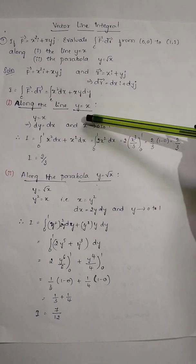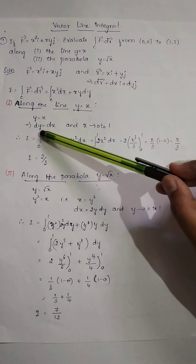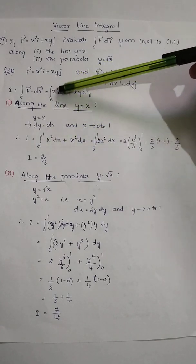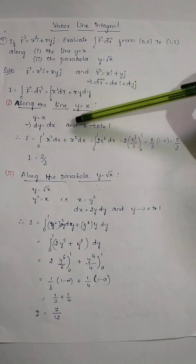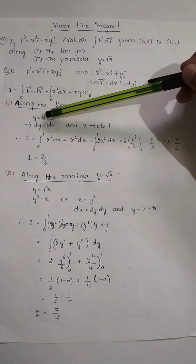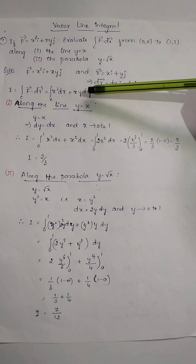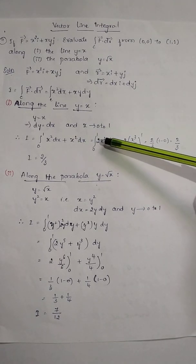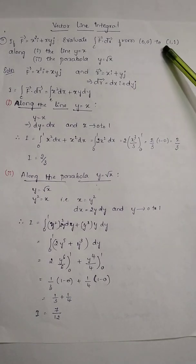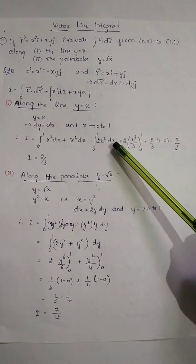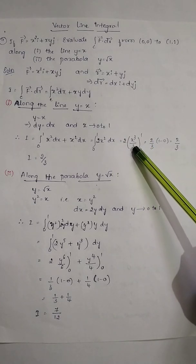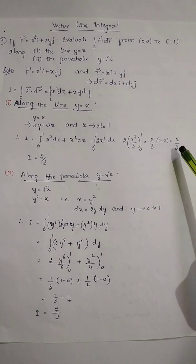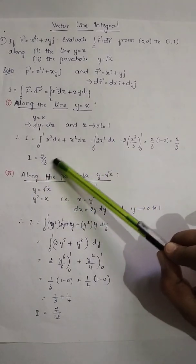Substituting y = x and dy = dx into F·dr: x²·dx + x·x·dx = x²·dx + x²·dx = 2x²·dx. So I = integral from 0 to 1 of 2x²·dx. Integrating gives 2·(x³/3) evaluated from 0 to 1, which simplifies to 2/3. So the answer along the line y = x is I = 2/3.